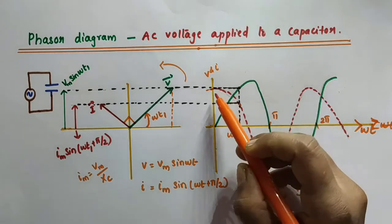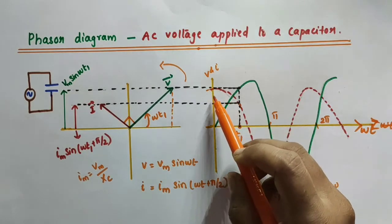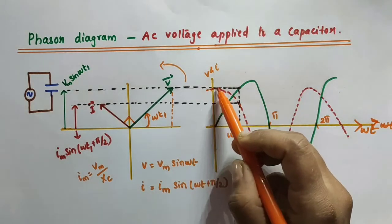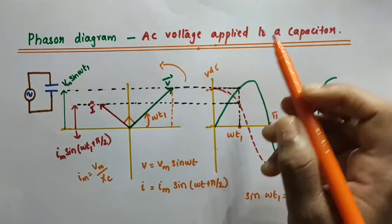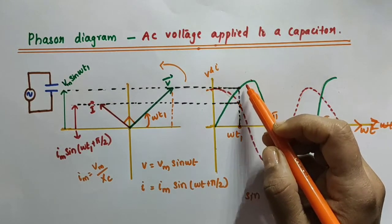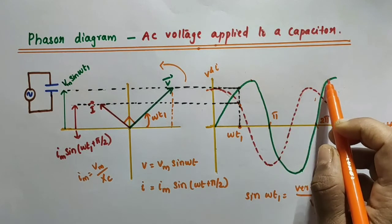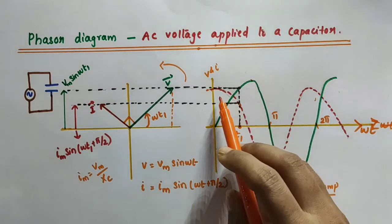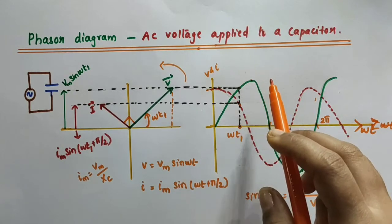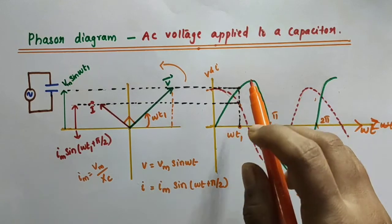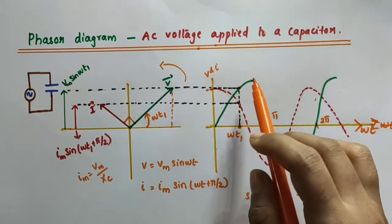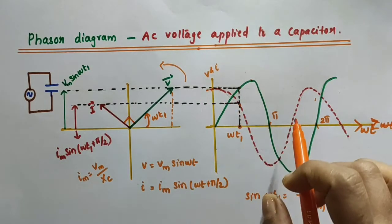The current reaches its maximum value earlier than the voltage. The green signal represents voltage and the red one represents current. You can see that current reaches its maximum at a particular time, but voltage reaches its maximum only after some time. This happens at two successive peaks — current always reaches maximum first, and voltage reaches maximum later by one-fourth of a period, corresponding to the π/2 phase difference.